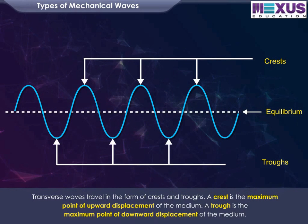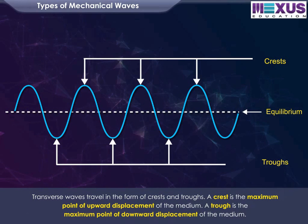Transverse waves travel in the form of crests and troughs. A crest is the maximum point of upward displacement of the medium. A trough is the maximum point of downward displacement of the medium.